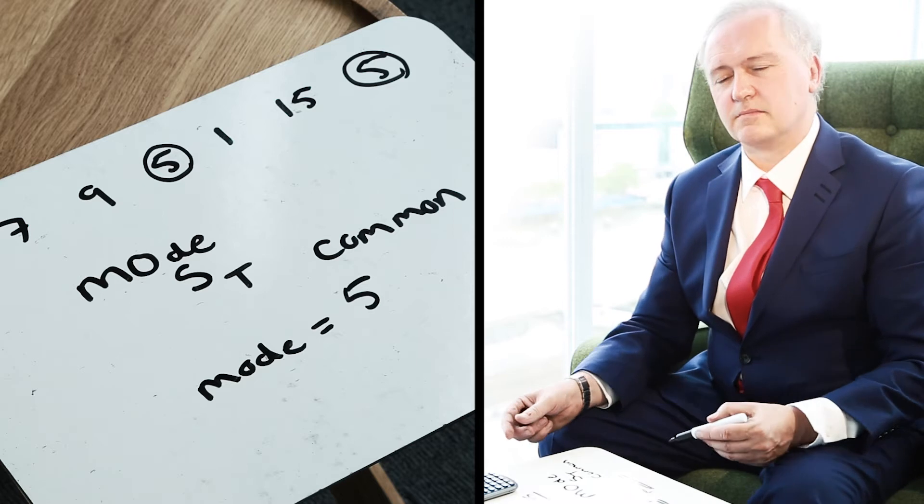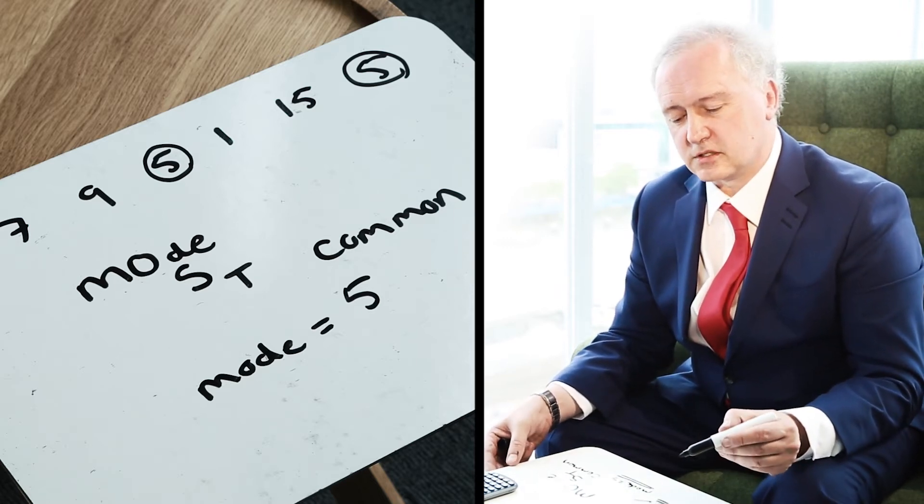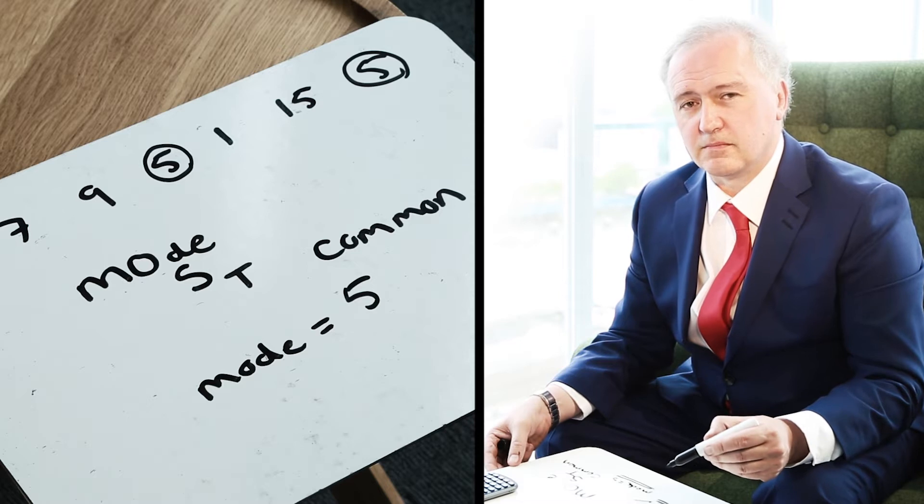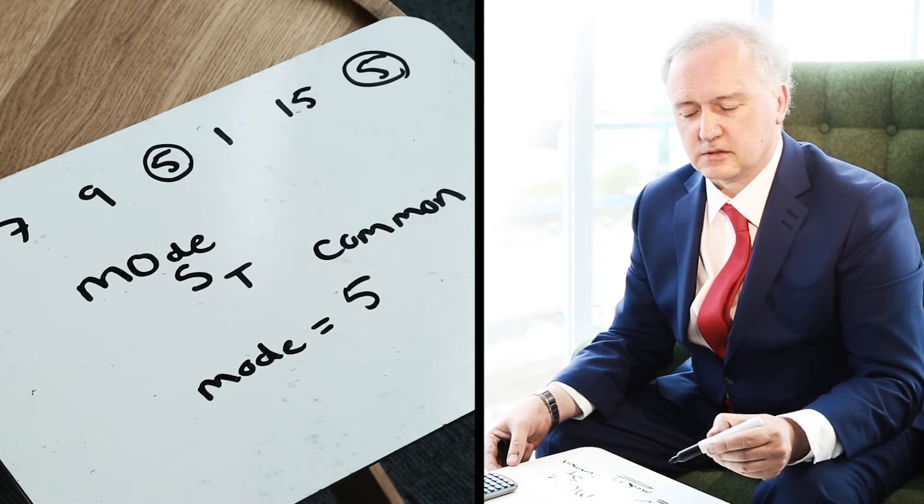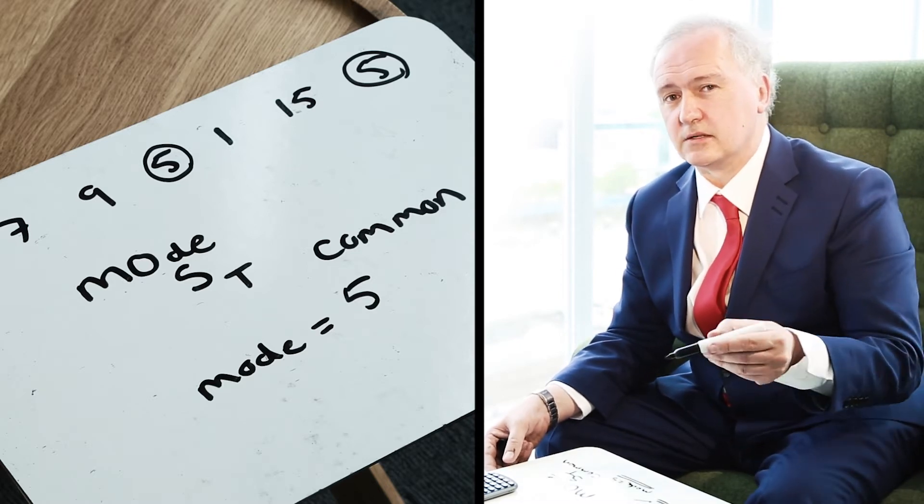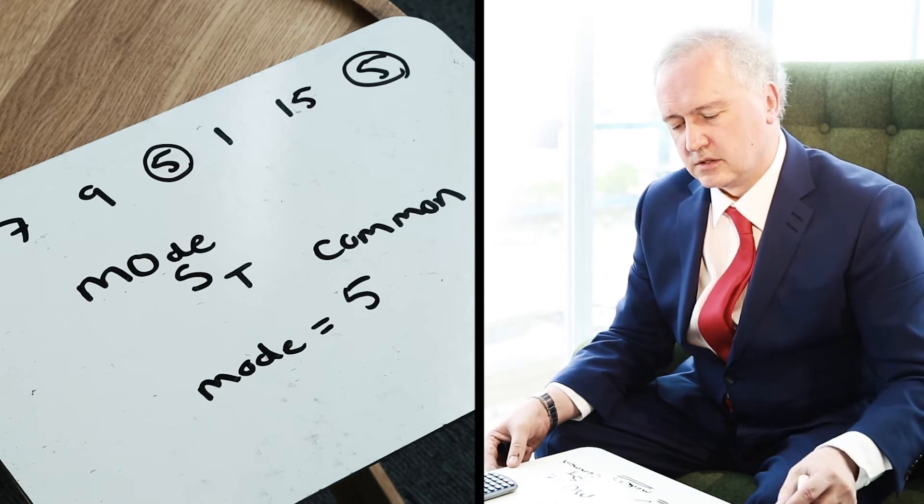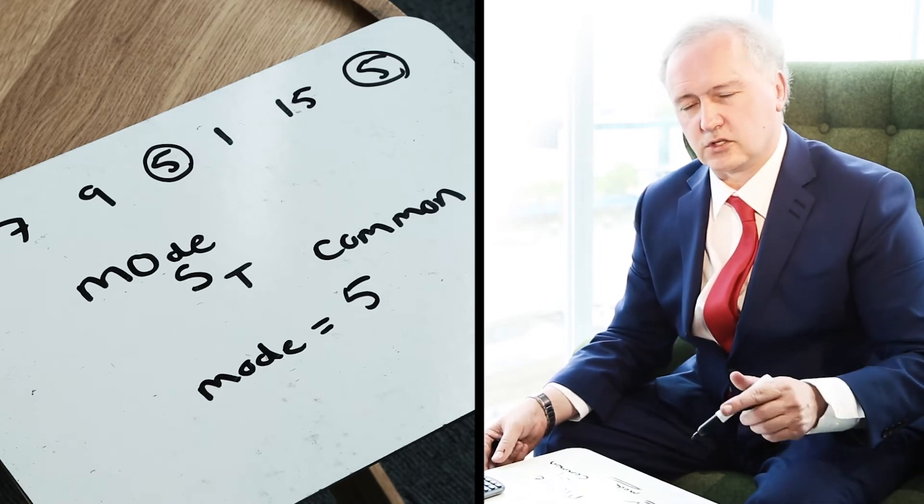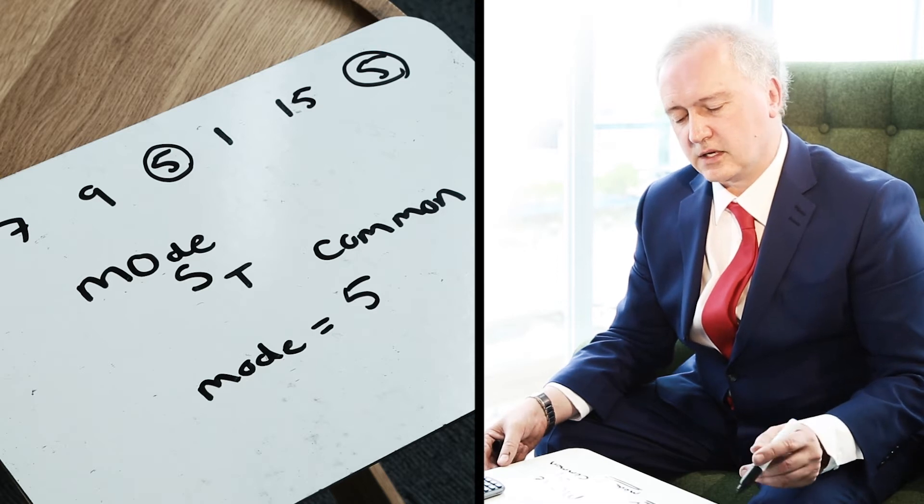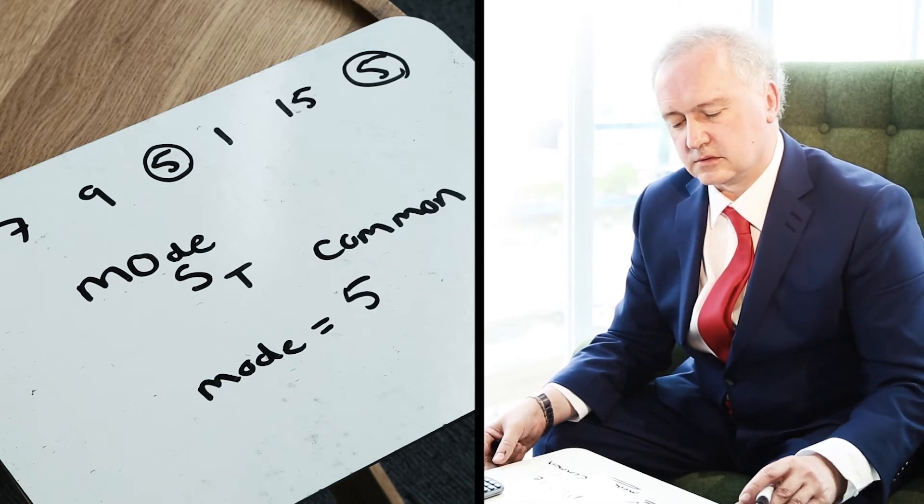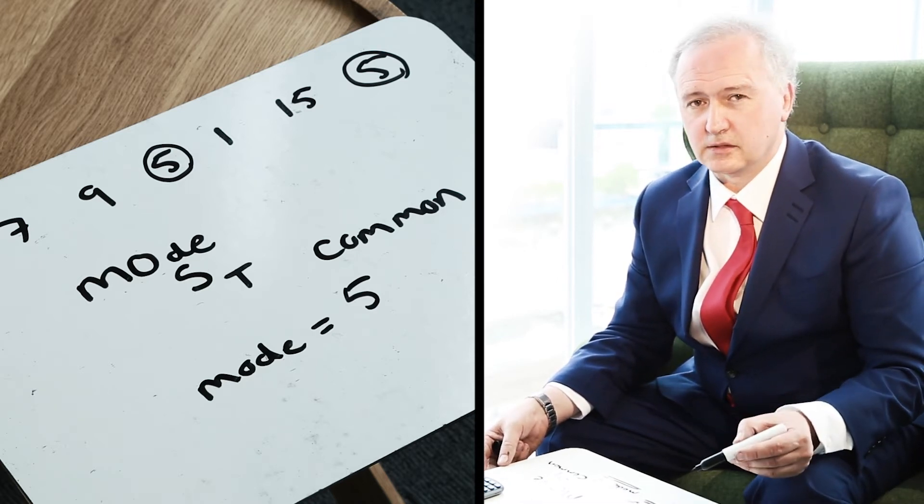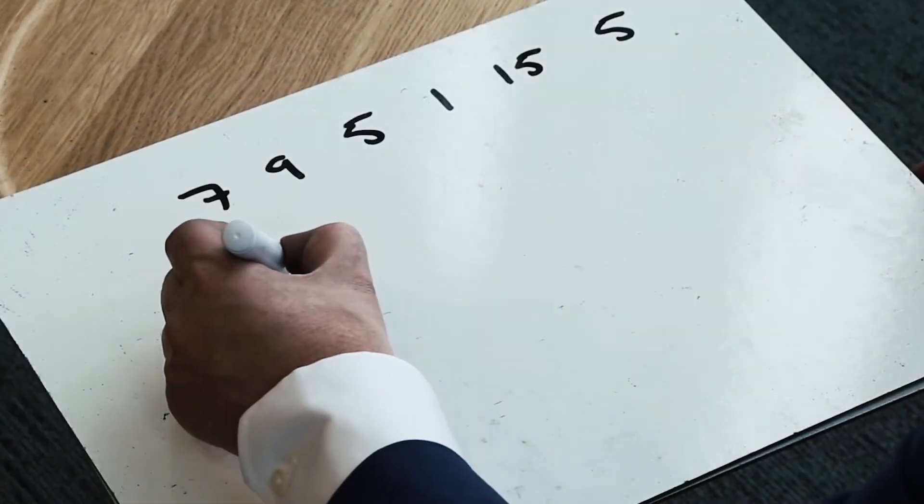When I go to calculate the median, it's absolutely crucial that we first rewrite the numbers from smallest to largest. We rank the data in ascending order from smallest to largest, and I'd be ultra careful to make sure that all the numbers are included. When calculating the median, I'm going to find the middle number of an ascending series from smallest to largest.